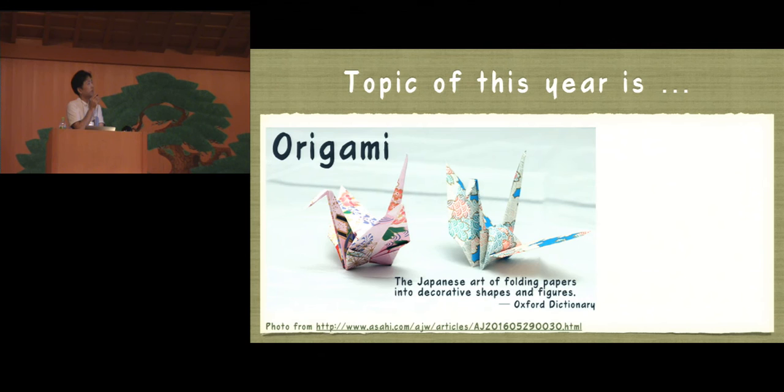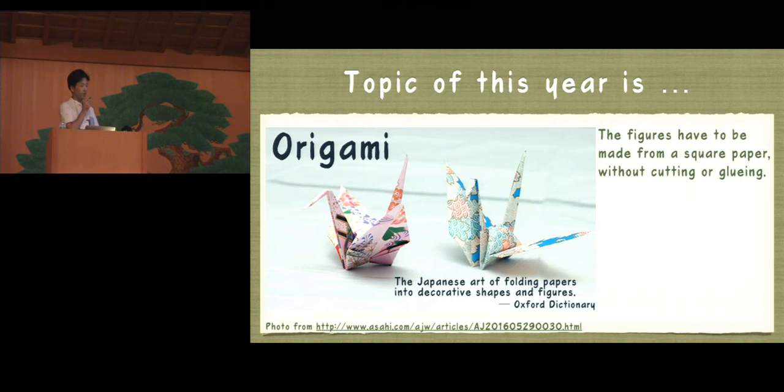The topic of this year is origami. So origami is the art of folding papers. And this is one of the traditional Japanese cultures. And the ordinary origami has to be made from square paper like this, without cutting or gluing. And then actually this origami is a crane. Origami crane is one of the typical origami in Japanese. Most of the Japanese know, maybe know how to fold them.